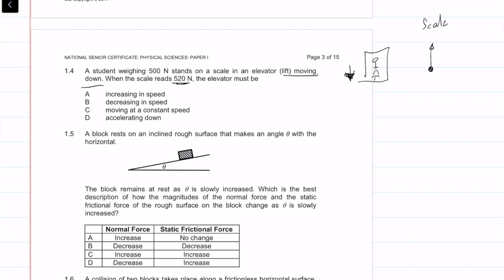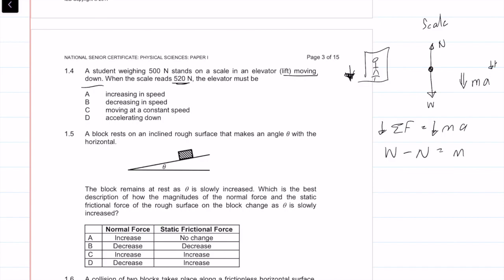The free body diagram shows the normal force upward and weight downward. Taking downwards as positive, the sum of forces equals mass times acceleration downwards. So we get: weight minus normal force equals ma, which gives us the normal force equals mass times acceleration minus weight — or rearranged, normal force equals ma minus weight.